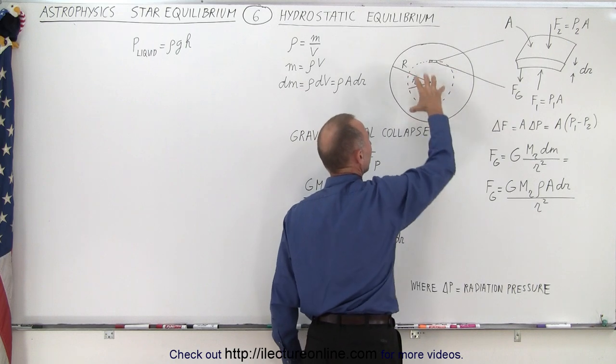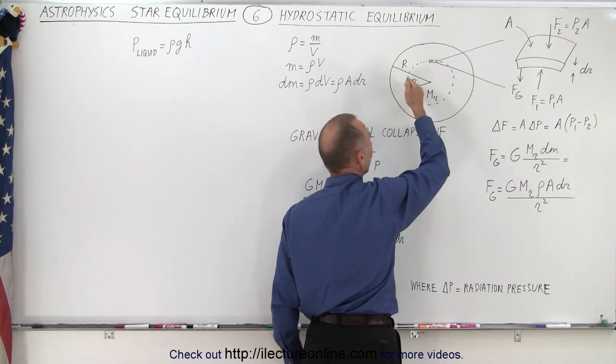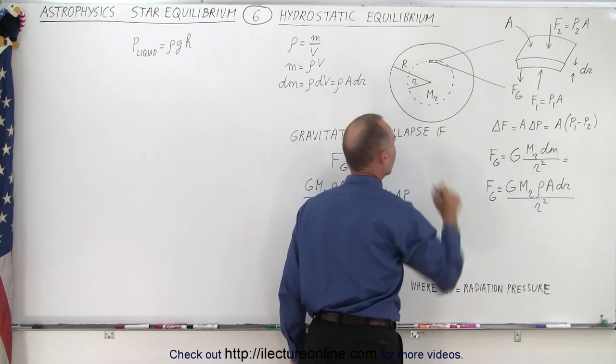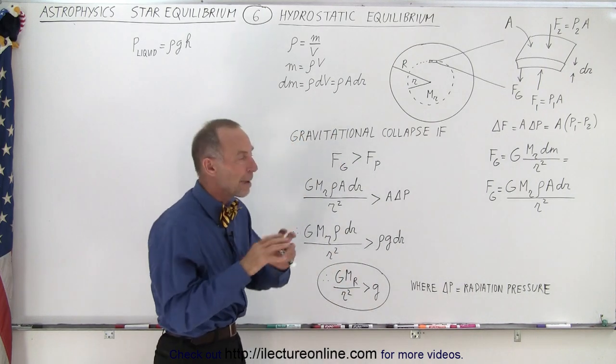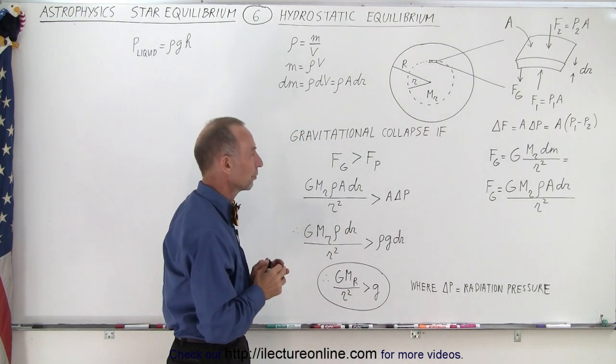And of course, the mass then within this spherical region that is r or less than r is then called m sub r. It's the mass contained within that inner portion of the star.